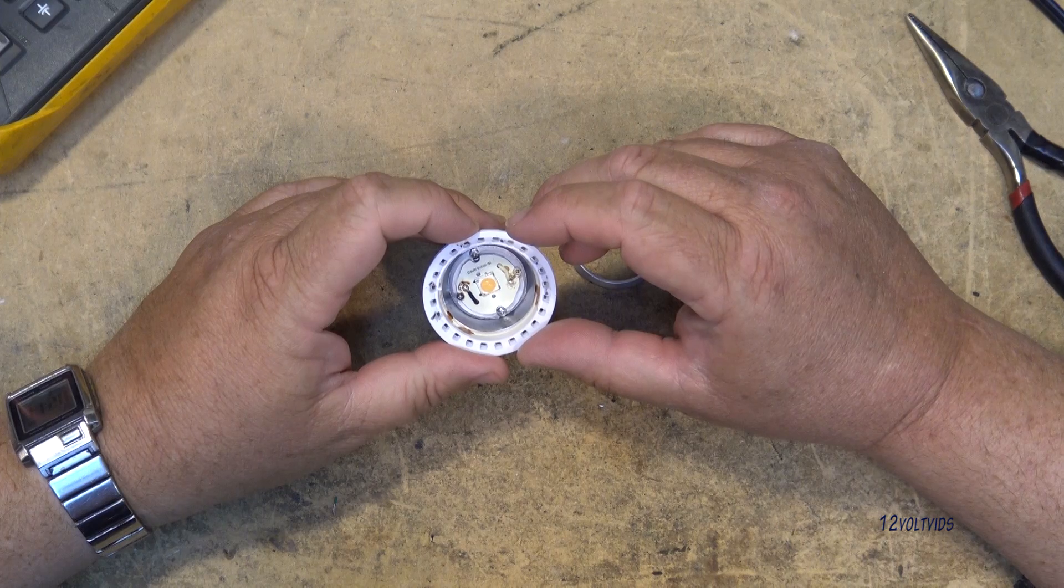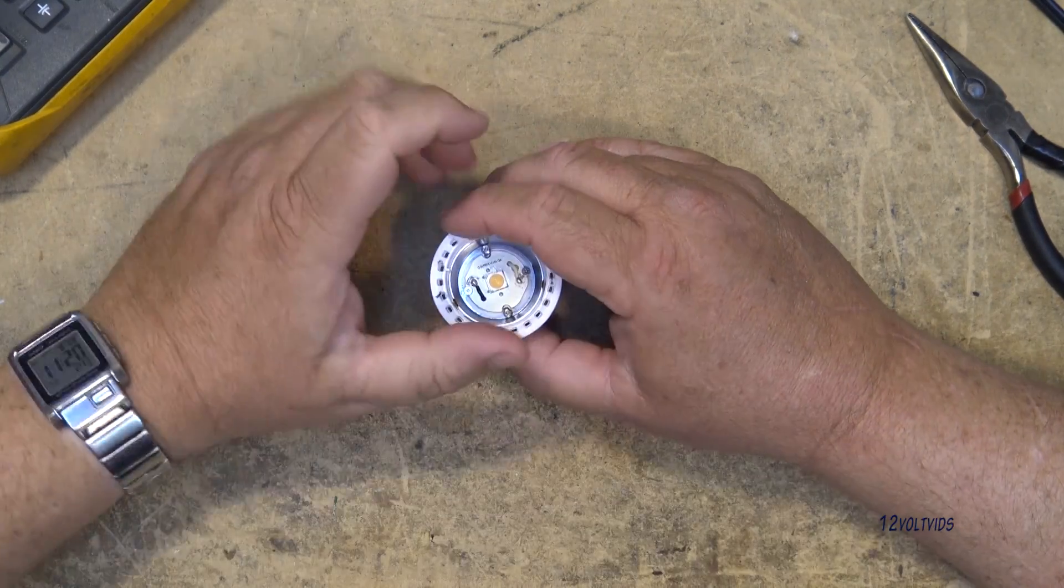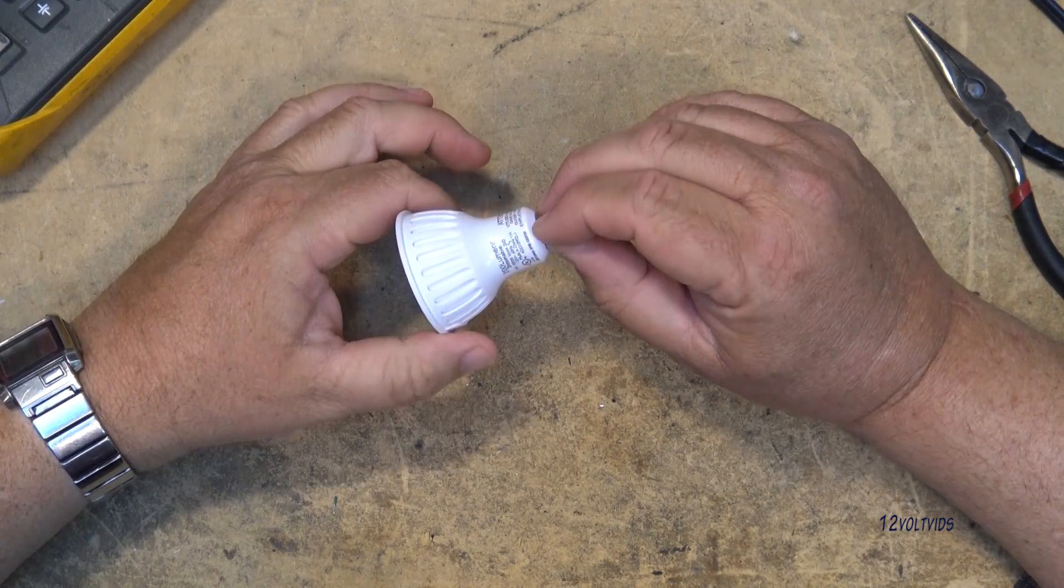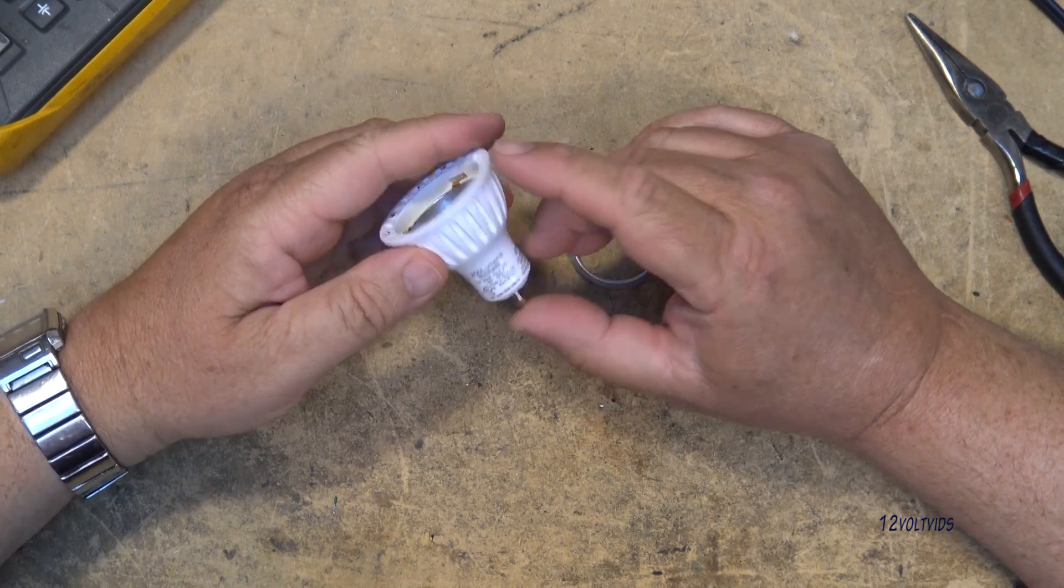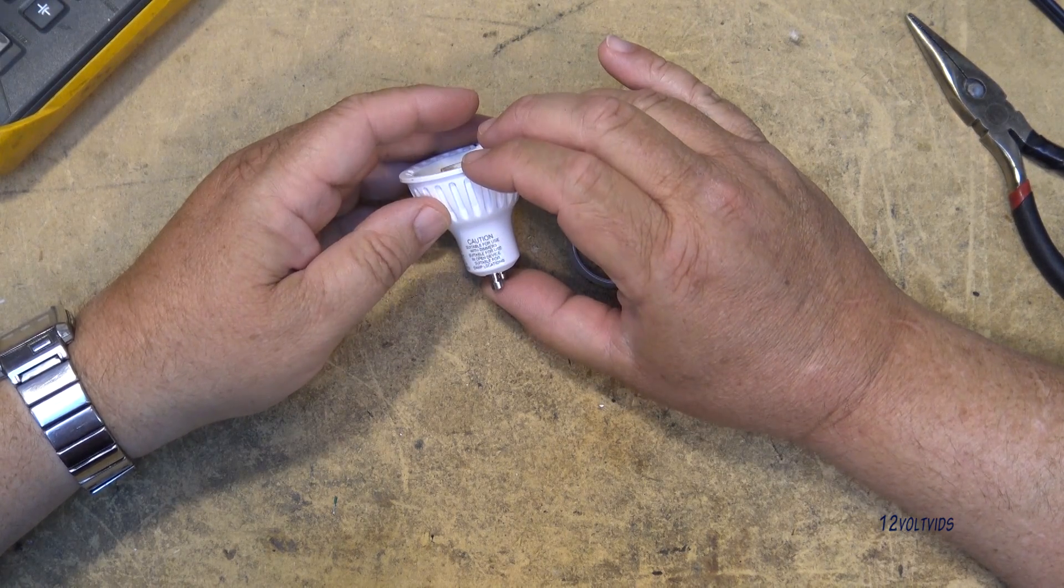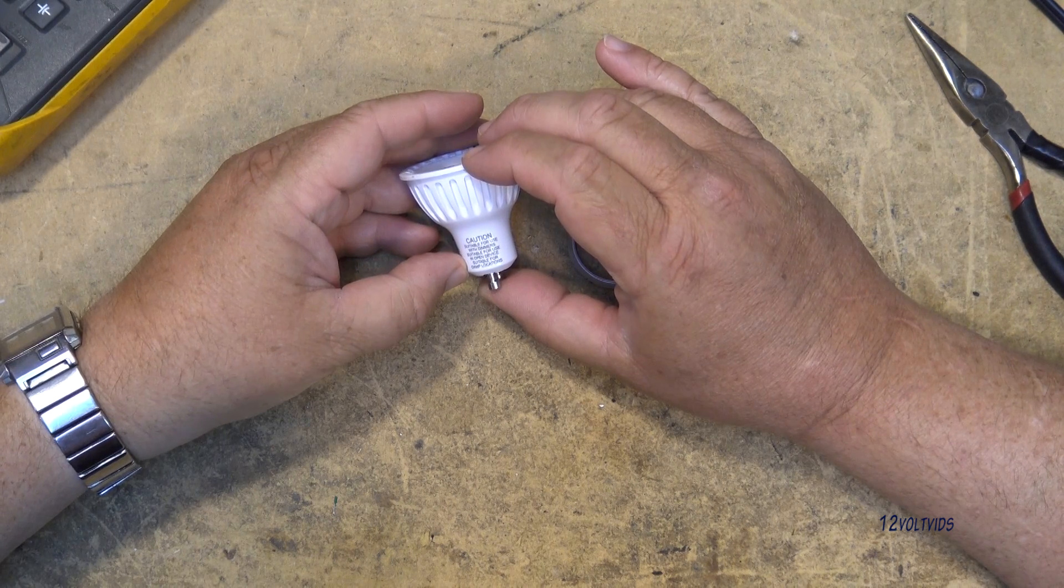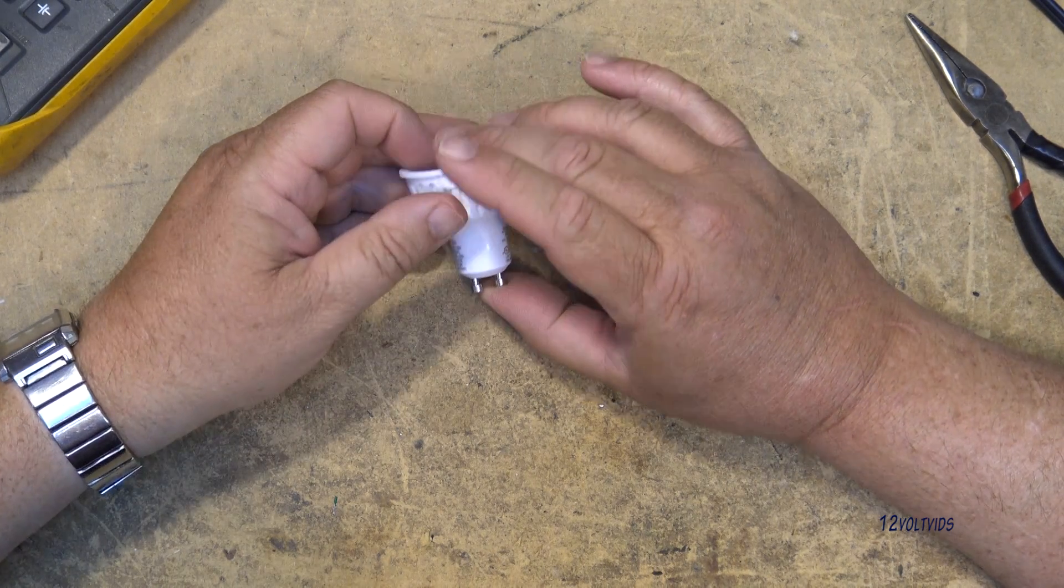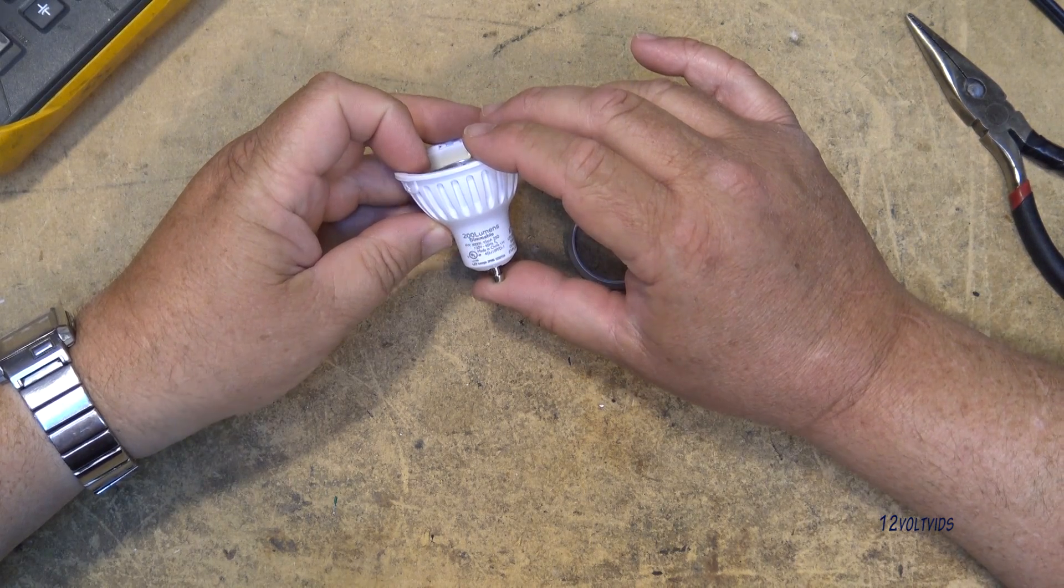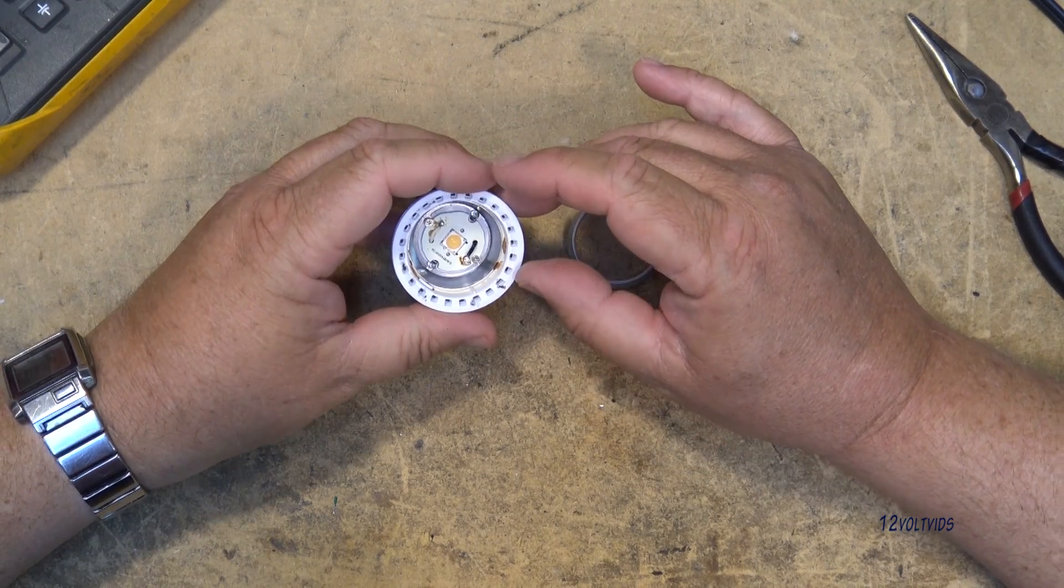They tell us how we're going to save all this money and give us rebates. These bulbs here are about two years old. Suitable for use with dimmers, suitable for damp locations. This is a sealed 200 lumens, dimmable 4 watt, was supposed to be equivalent to a 35 watt halogen bulb.